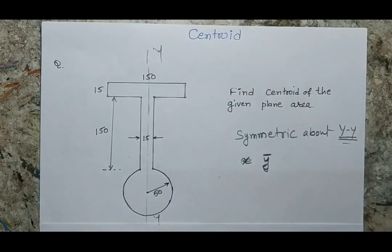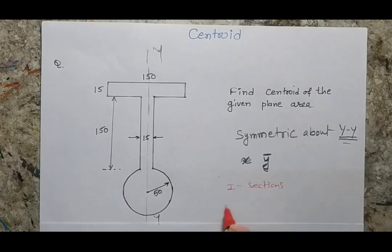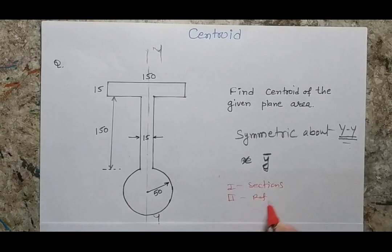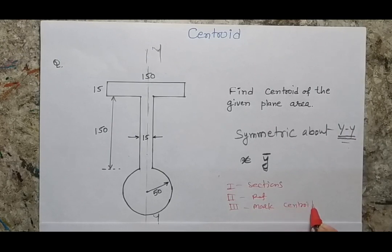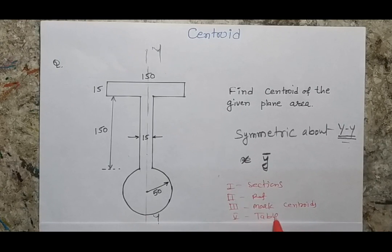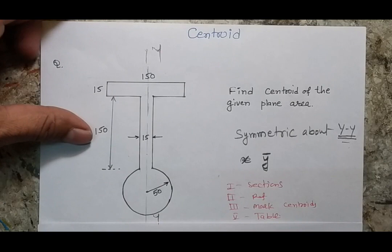As usual, I will follow four steps. First, I identify the different sections. Second, I make references. Third, I mark the individual centroids. Fourth, I make a table. I always follow these four rules.